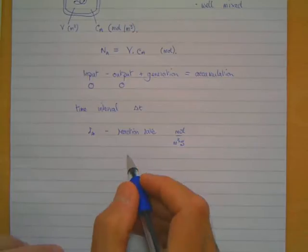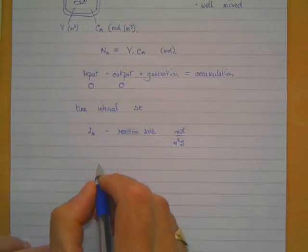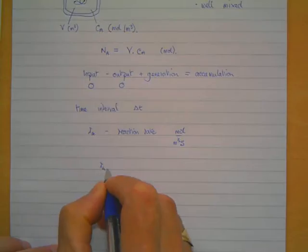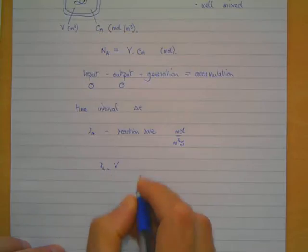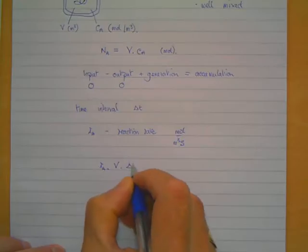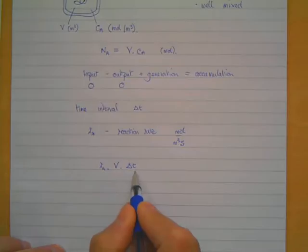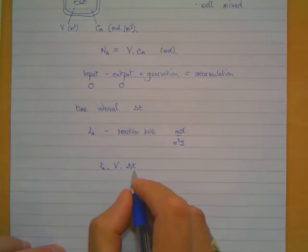So we can use rA in the generation term. So the reaction rate multiplied by the volume multiplied by our time delta t gives you the number of moles of A which have reacted during this time interval delta t.